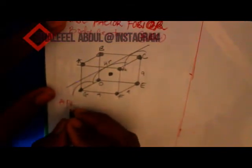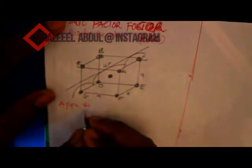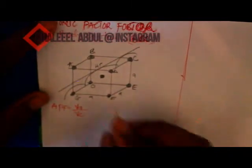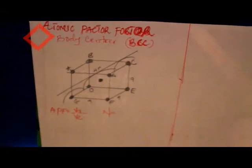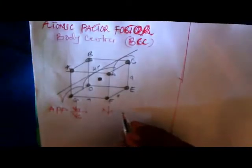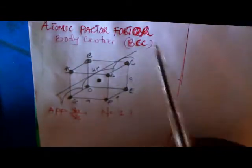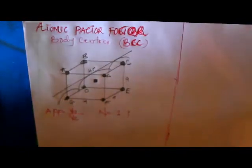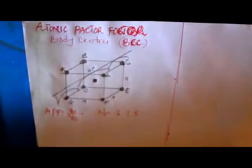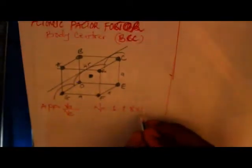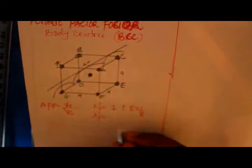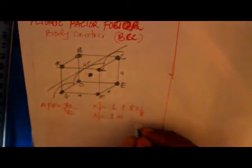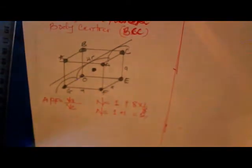Atomic packing factor is equal to volume of atom over volume of cubic cell. We need to find our N. It is very simple. We have one atom at the middle. And we have eight atoms at the end. Each one of them contributes one over eight, times one over eight.